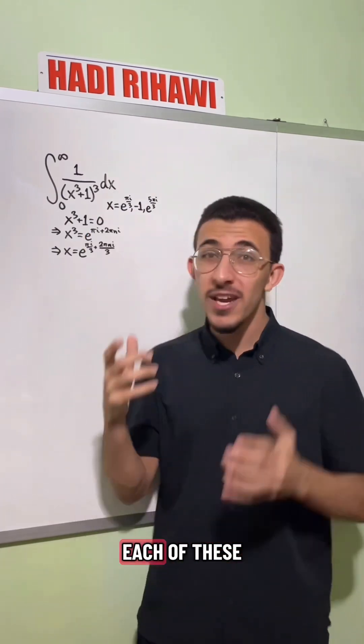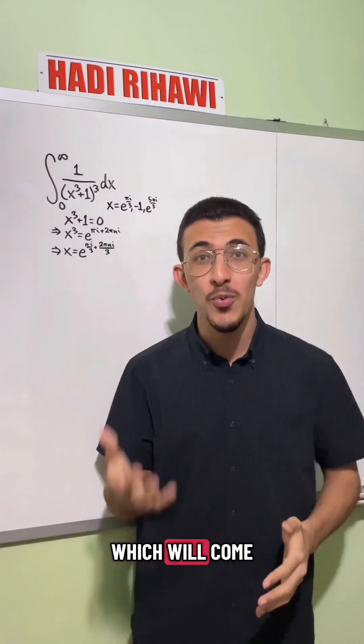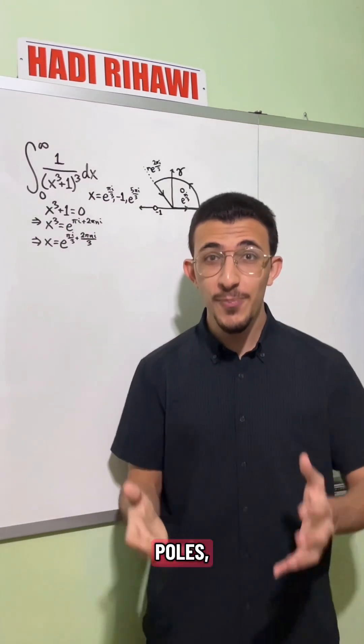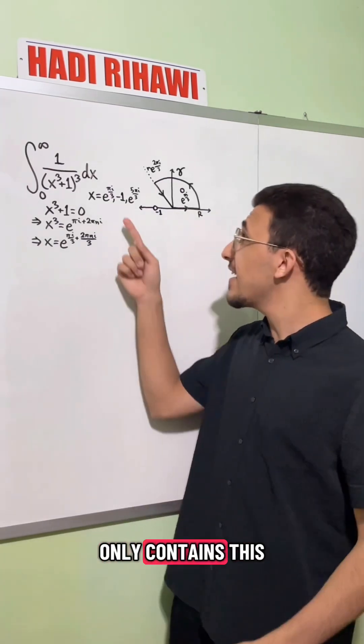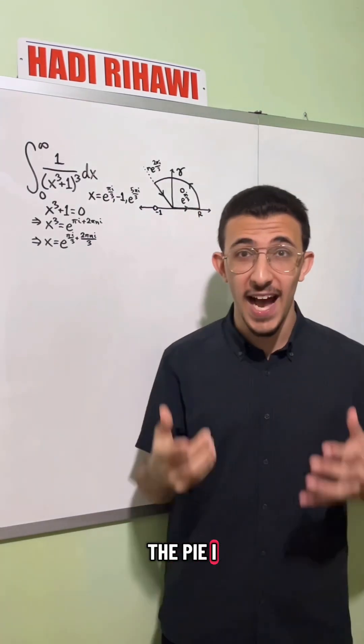And because of this third power, each of these poles is of order three, which will come into play later. Based on these poles, we're going to use a contour that only contains this first pole at e to the pi i over three.